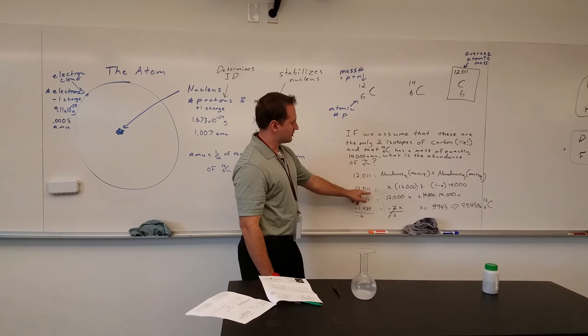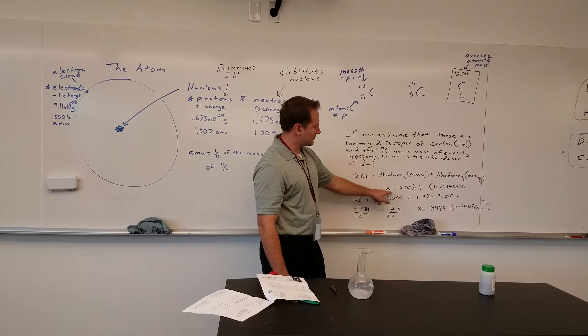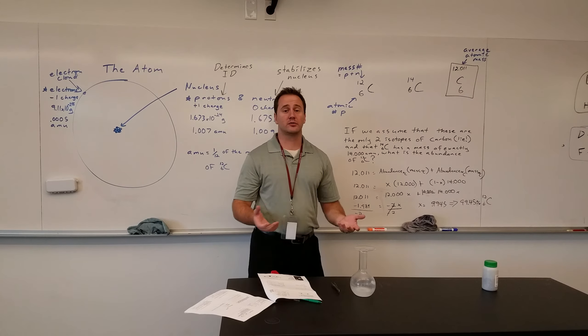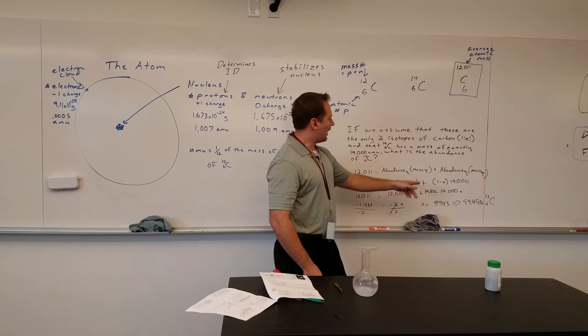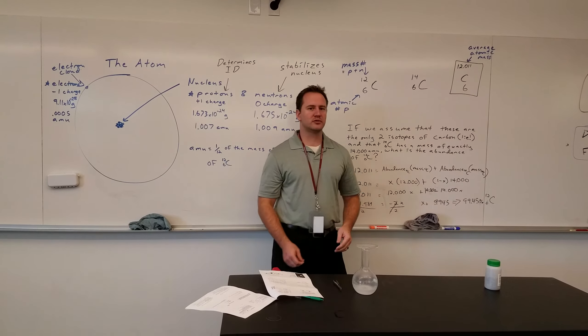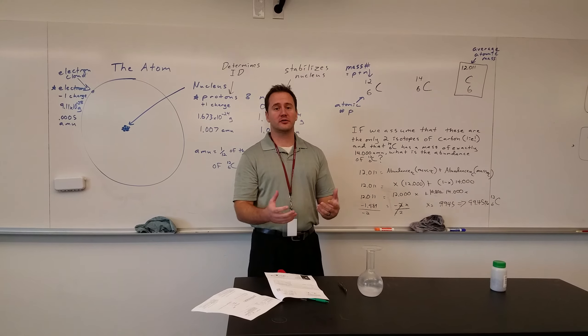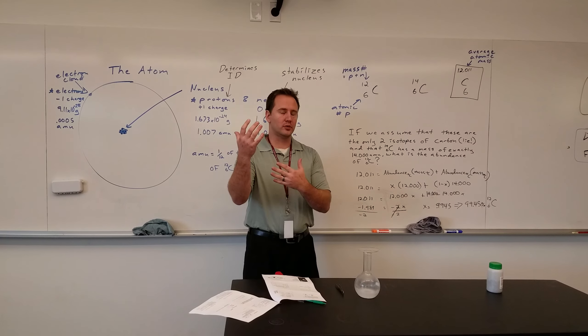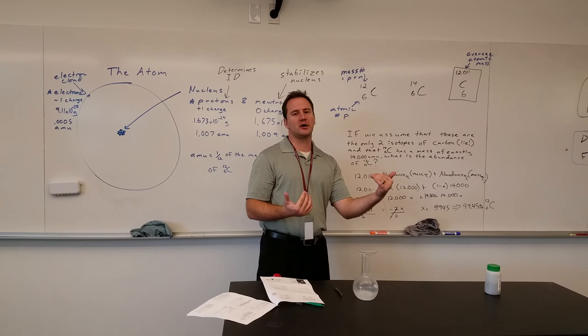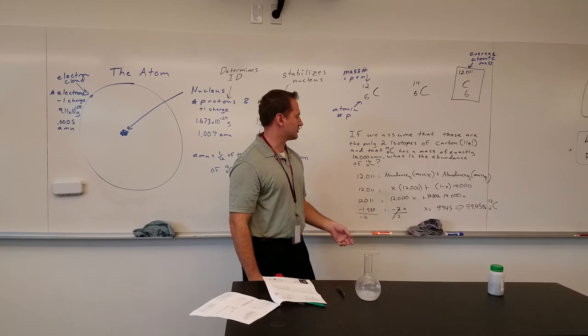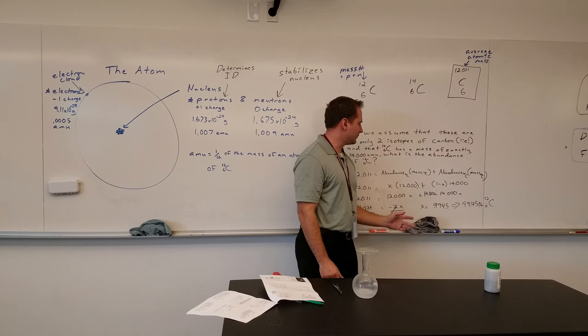And then, I set the abundance of carbon-14 as 1 minus x. And the reason for that is, we're assuming those are the only two isotopes, the whole fraction, the whole portion of it, minus the portion that's carbon-12, is going to be equal to carbon-14. So, that's how we're going to represent it.